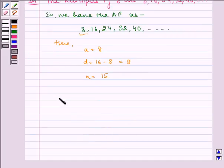Now, let us find the sum. S_N is equal to N by 2 multiplied by 2A plus N minus 1D.